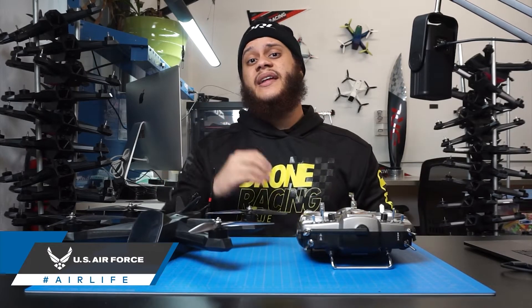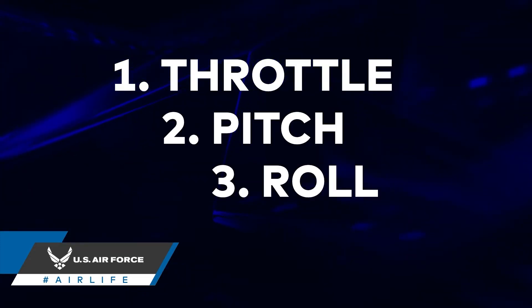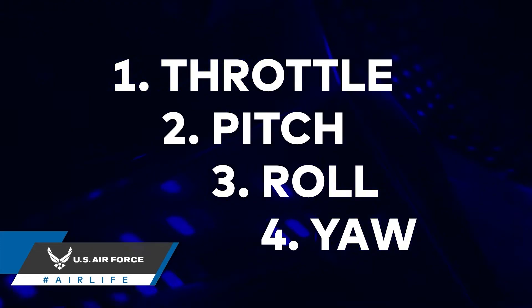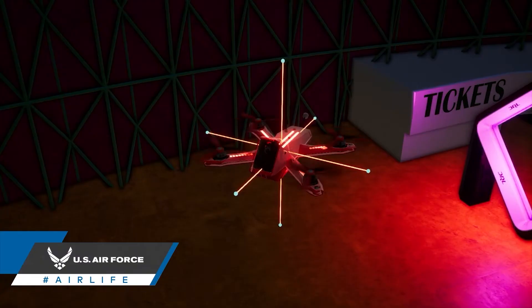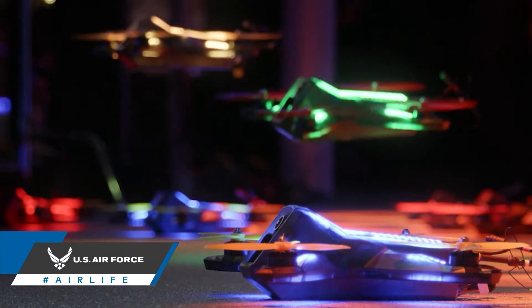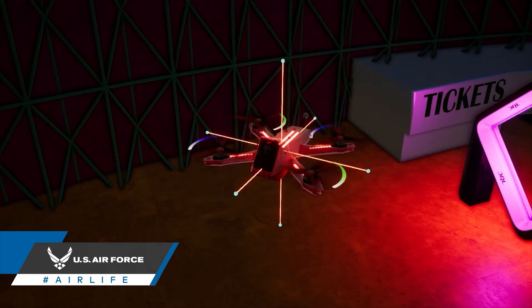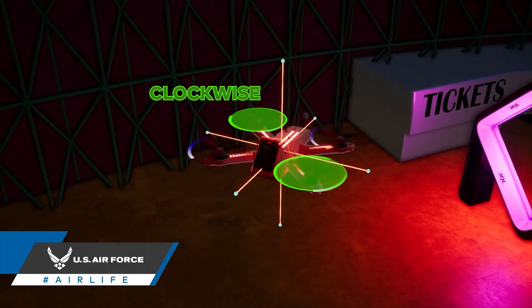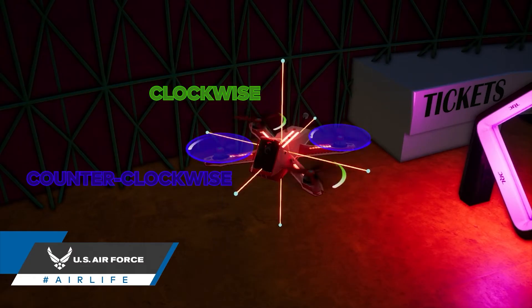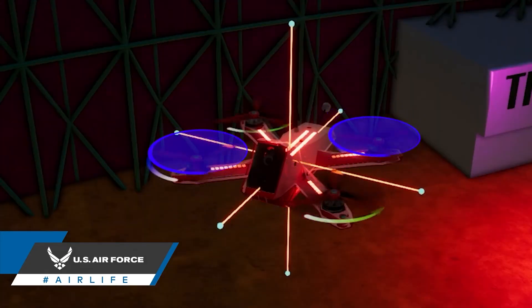There are four main inputs a pilot can give a drone: throttle, pitch, roll, and yaw. Throttle will raise your drone's altitude. To hover, the throttle is utilized to power the four propellers evenly. The propellers create a downward thrust with two propellers spinning clockwise and two spinning counterclockwise. Notice that the ones diagonal to each other spin in the same direction.